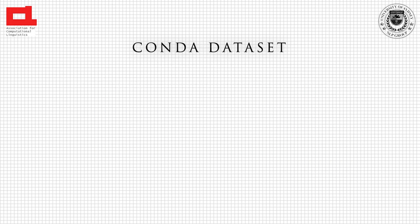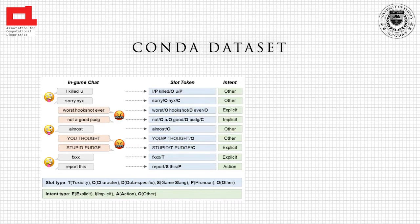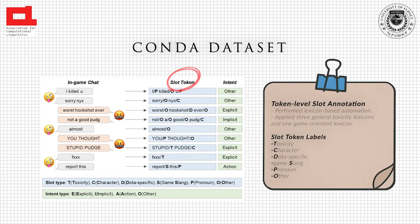Let's have a deeper look at how our dual-level annotation works. First, the token-level slot annotation is conducted based on four different lexicons. There are six labels, including toxicity, character, Dota-specific, game slang, pronoun, and other.